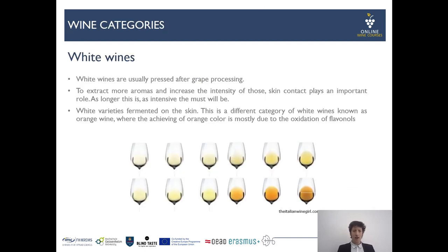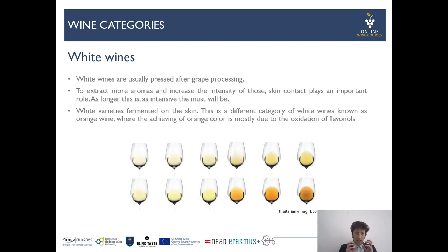White wines are usually pressed after grape processing — either with a short maceration or none. If you want to extract some aromas, you increase skin contact, but not to the point of fermentation on the skin. White varieties fermented on skin are rare; traditionally we see it with amphora wines. With extended skin contact you get darker colors and more phenols. Orange wines play with this, sometimes excessively, resulting in really astringent, bitter wines also marked by oxidation, giving the typical amber color from browning of phenols.